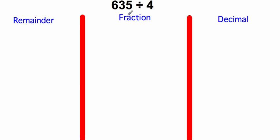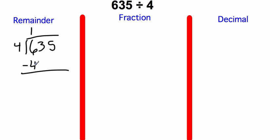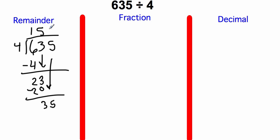Let's try one. We have 635 divided by 4. We want to write it with a remainder, as a fraction, and as a decimal. 4 goes into 6 one time. 1 times 4 is 4. 6 minus 4 is 2. Bring down our 3. 4 goes into 23 five times. 5 times 4 is 20. Subtract to get 3. Bring down our last number. 4 goes into 35 eight times. 8 times 4 is 32. Subtract and we get a remainder of 3. So as a remainder, we have 158 remainder 3.